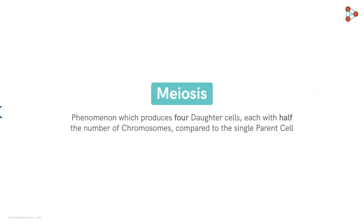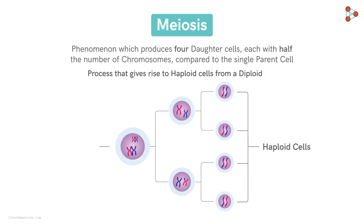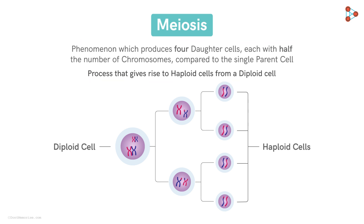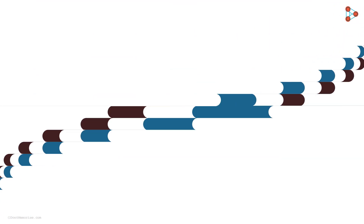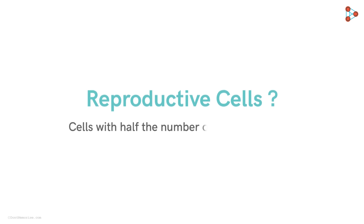The previous video introduced us to meiosis, defined as an exceptional phenomenon which produces four daughter cells each with half the number of chromosomes compared to the single parent cell. Meiosis is a process that gives rise to a haploid cell from a diploid one. Now before moving ahead with the actual process, let's address the question we left you with in the previous video: which are the reproductive cells with half the number of chromosomes?